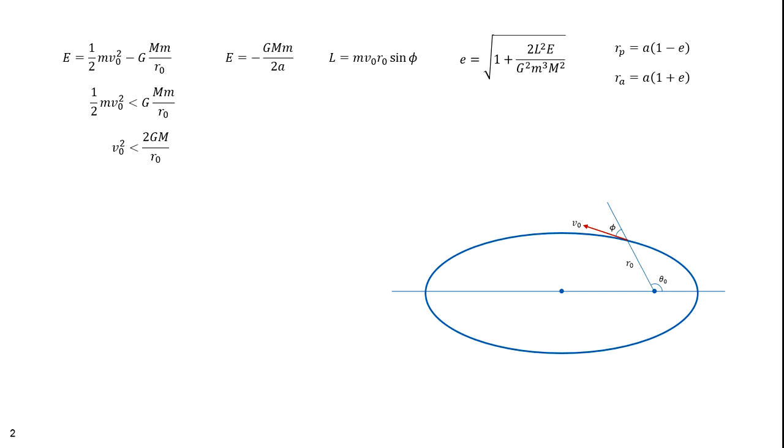So far, we've determined the size and shape of the orbit. The orientation of the orbit is specified by the argument of perigee, the angle between the line from the focus to the perigee point and the vector r. The angle theta zero can be determined from this equation, which is the polar equation of an ellipse.